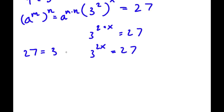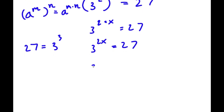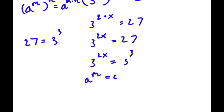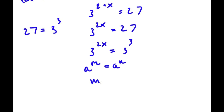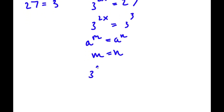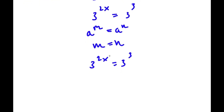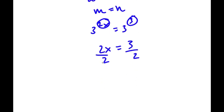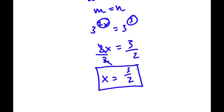Now 27 is the same thing as 3 to the power of 3. So I have 3 to the power of 2x is equal to 3 to the power of 3. If we have a to the power of m equal to a to the power of n, then m equals n — because if both bases are the same, both exponents are the same. So our exponents 2x and 3 are equal: 2x equals 3, and dividing both sides by 2 gives x equals 3 over 2.